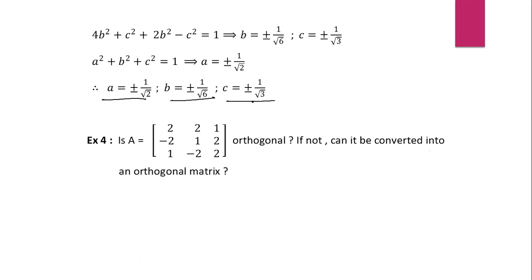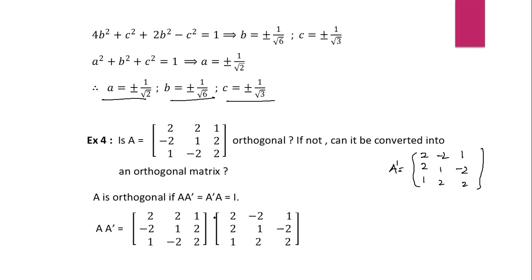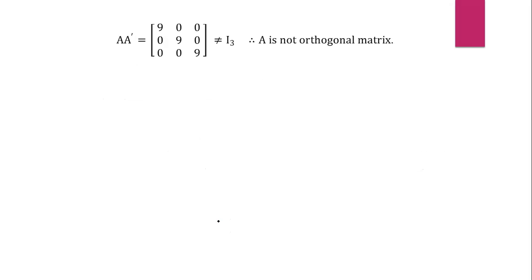Let us take the next example: is A orthogonal? If not, can it be converted into an orthogonal matrix? We have matrix A, and we calculate A into A transpose. The transpose writes rows as columns: first column 2, 2, 1; second column minus 2, 1, 2; third column 1, minus 2, 2. Computing the product, we get 9, 0, 0 in the first row; 0, 9, 0 in the second row; 0, 0, 9 in the third row — which is not the identity matrix. Therefore A into A transpose is not the identity matrix, so A is not an orthogonal matrix.